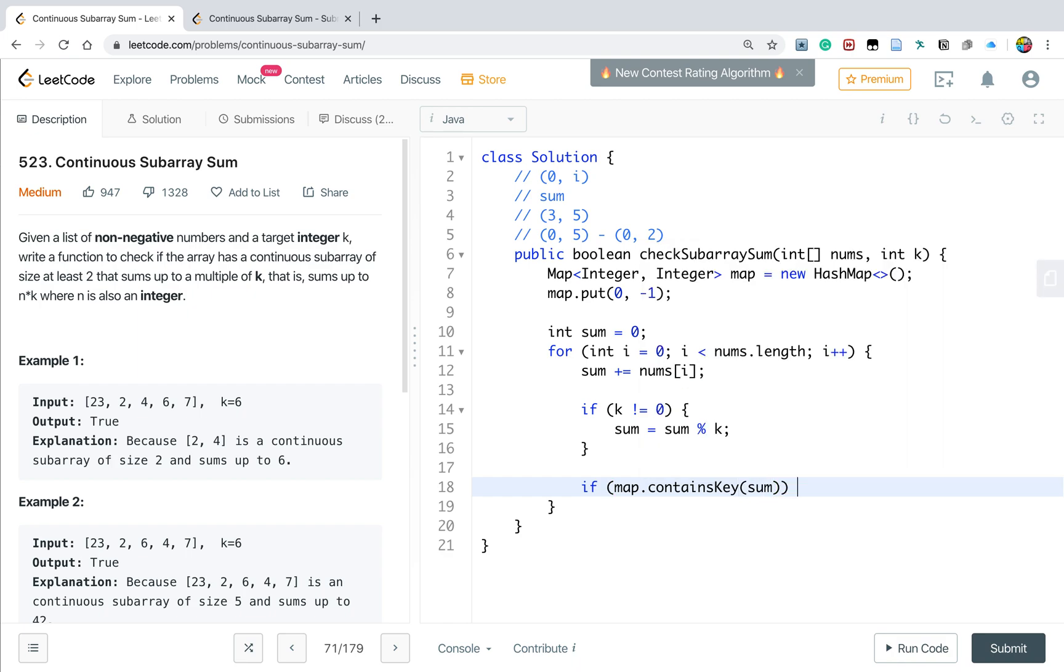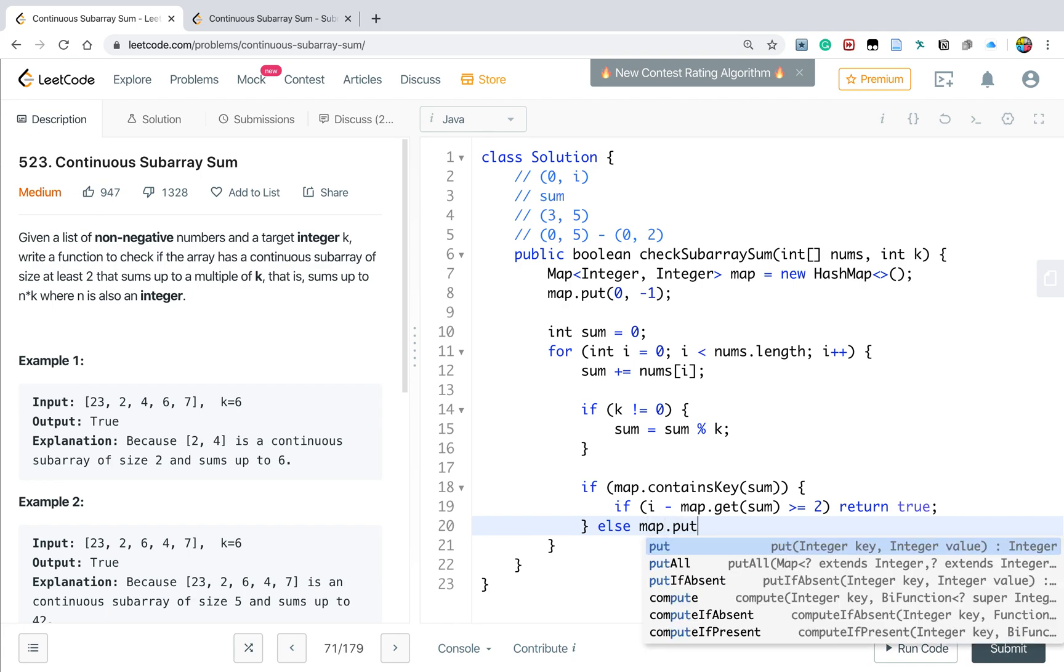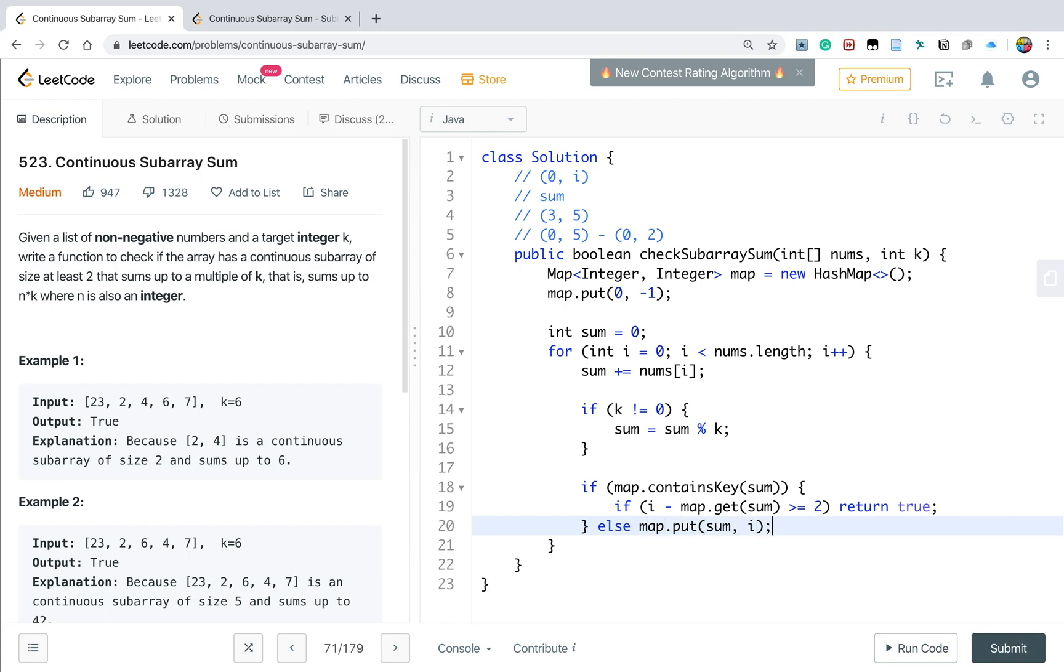If the map contains the key, we've already seen it before. Then we check the size: if i minus map.get(sum) is greater than or equal to two, we return true. Otherwise we put sum, i into the map. Finally, we return false.